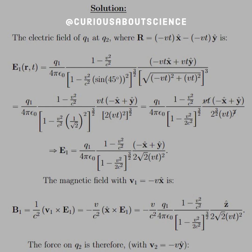The electric field of Q1 at Q2, where R equals negative Vt x-hat minus negative Vt y-hat, is E1(r,t) equals Q1 over 4πε₀. We use the same form for a charge moving at constant velocity. Since they're at identical positions, the angle between them is 45 degrees, which is why we have sine 45 in the expression.